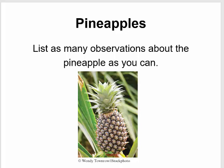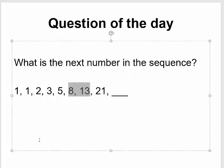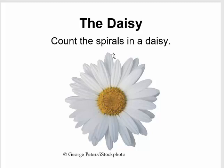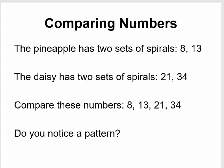If you count the spirals one way and then the other way on the pineapple, you'll notice that one number is 8 and one number is 13. Let me go back to this list — here's 8 and here's 13. If you count the spirals on the daisy — the inner spirals and the outer spirals — you're going to get the numbers 21 and 34. So the pineapple has two sets of spirals: 8 and 13. The daisy has two sets: 21 and 34.